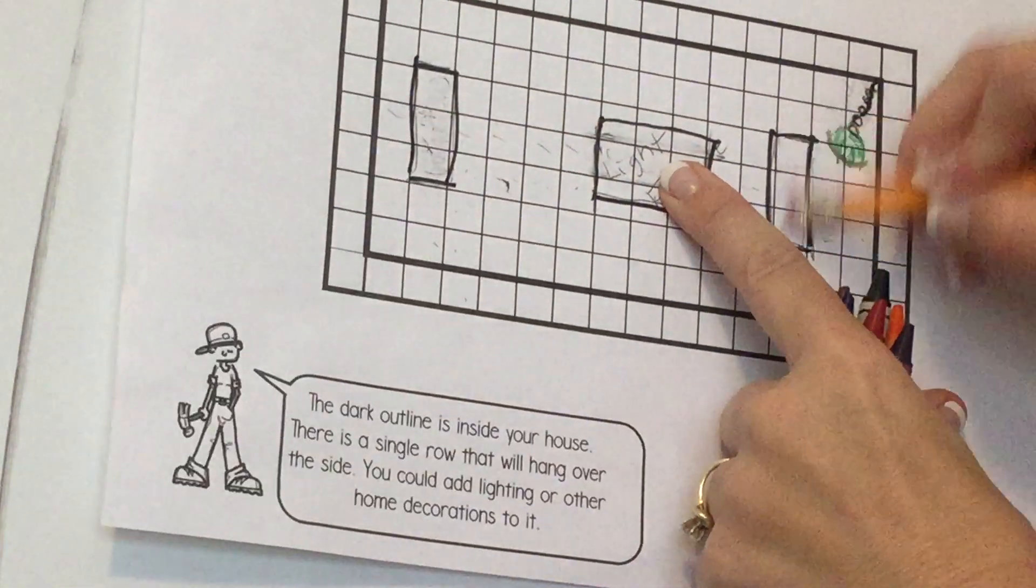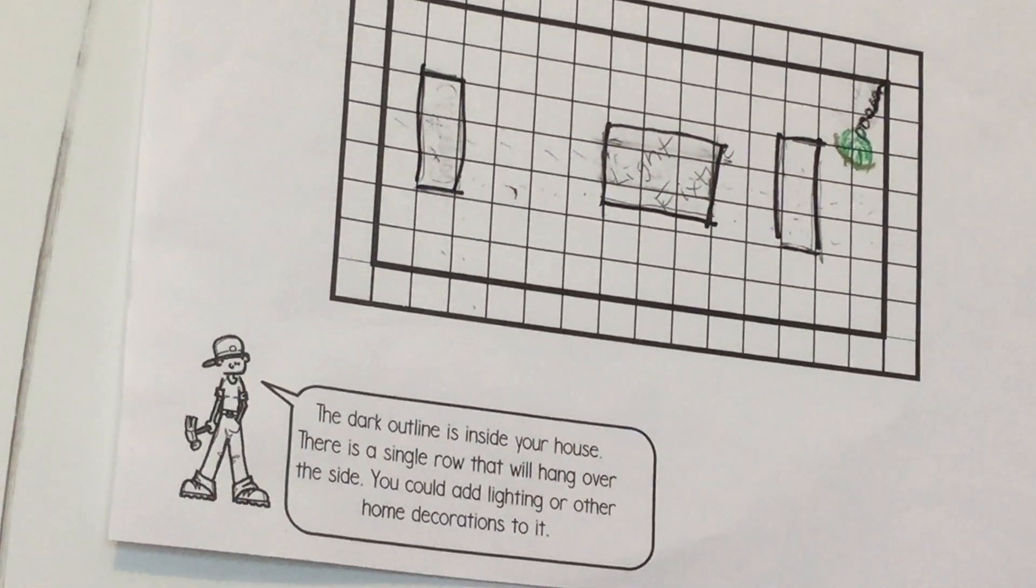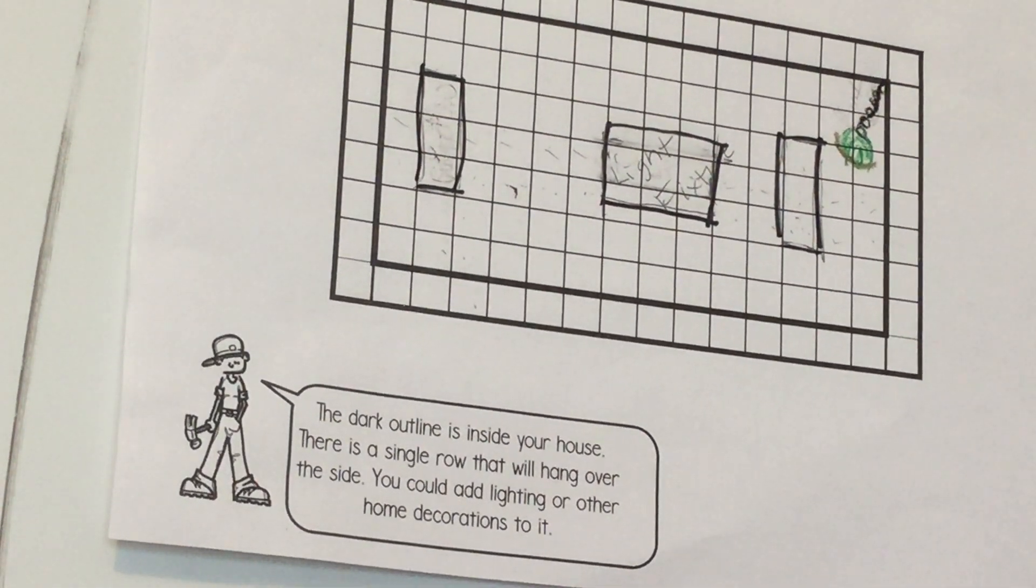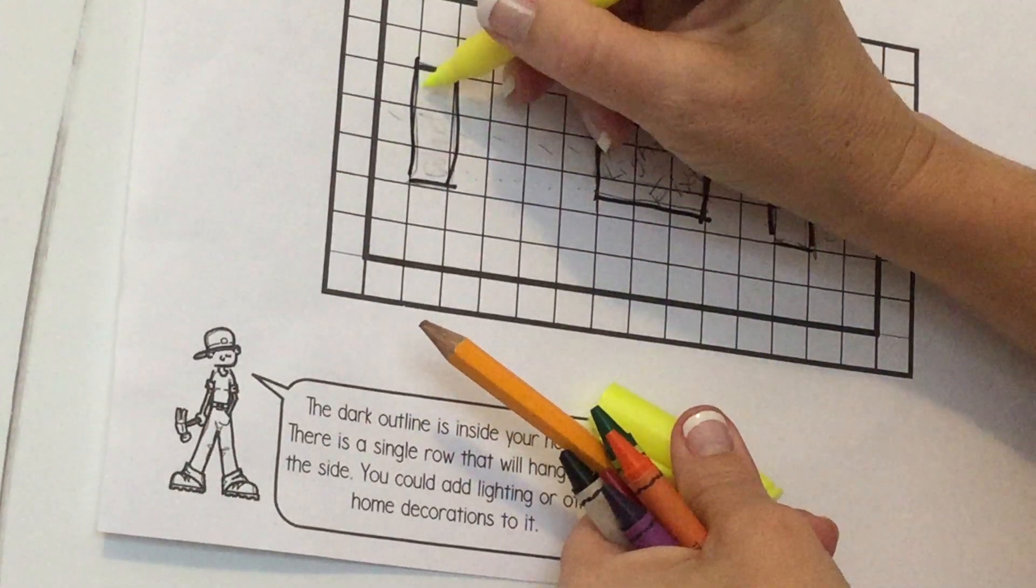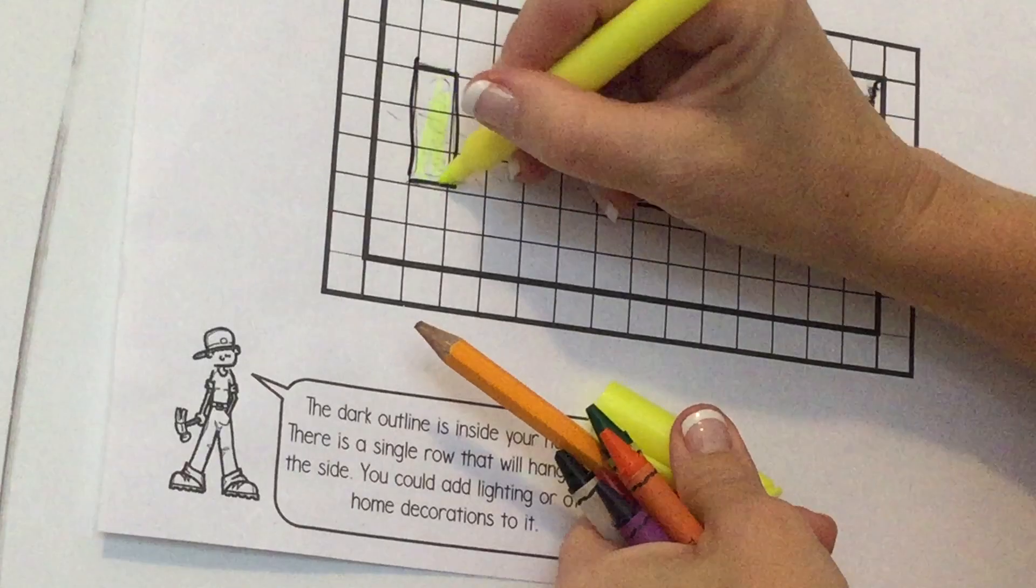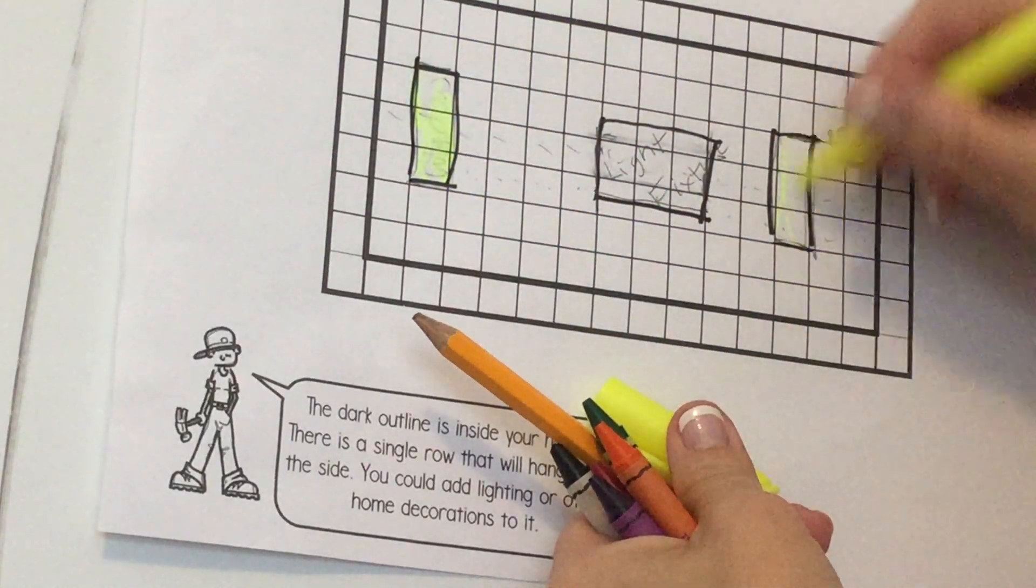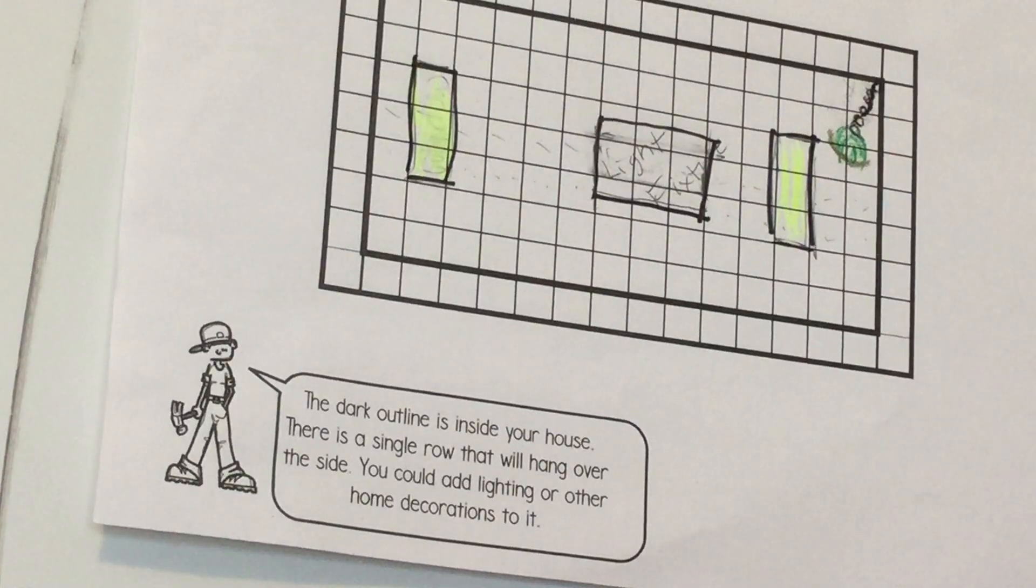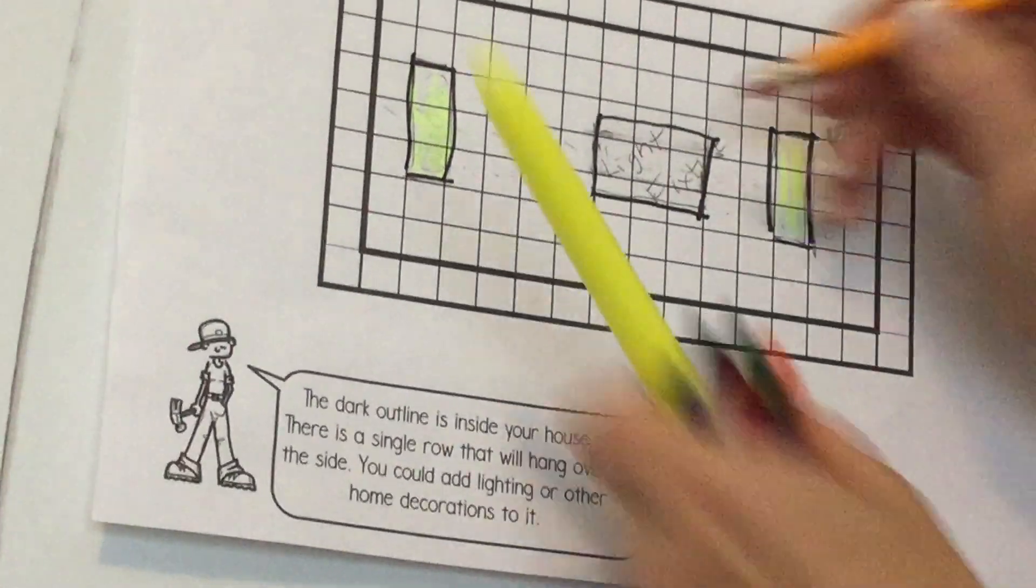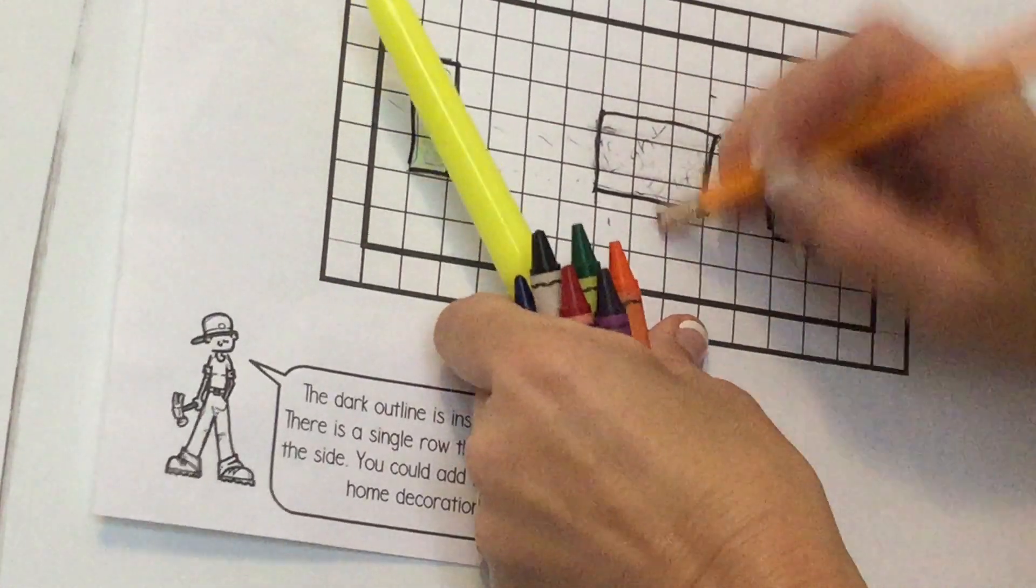Maybe y'all have some sunshine coming through. Ooh, I don't have a yellow. I'm going to use my highlighter for right now. Sunshine coming through the top and the light fixture. So you all get the idea. Draw a little light fixture.